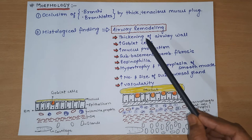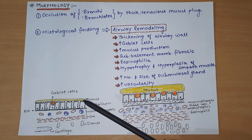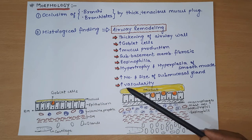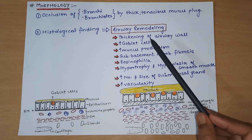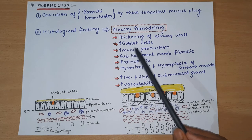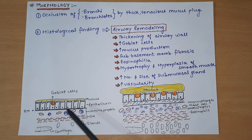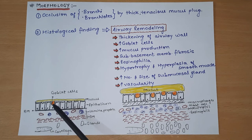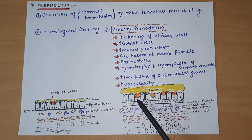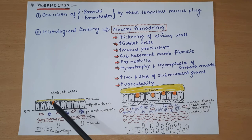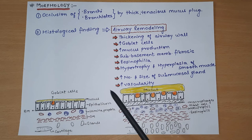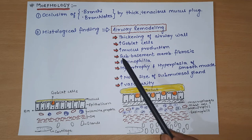In the remodeled airway: first there is thickening of the airway wall - we can see the wall diameter is increased. Goblet cell number increases, and mucous secretion and production is greatly increased compared to normal airway.